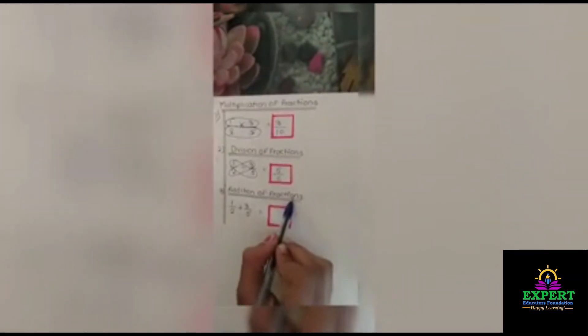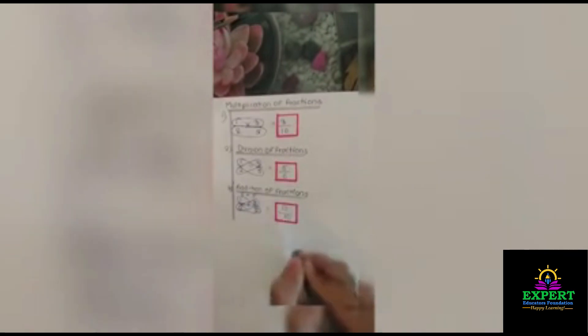Now next trick is addition of fractions. So 1 upon 2 plus 3 upon 5. Now this sum is something confusing. So see here, 5 plus 1 you get 6, and 3 plus 2 you get 5. So we have to plus them. 6 plus 5 you get 11 upon 5 plus 2 you get 10, and our answer is ready.